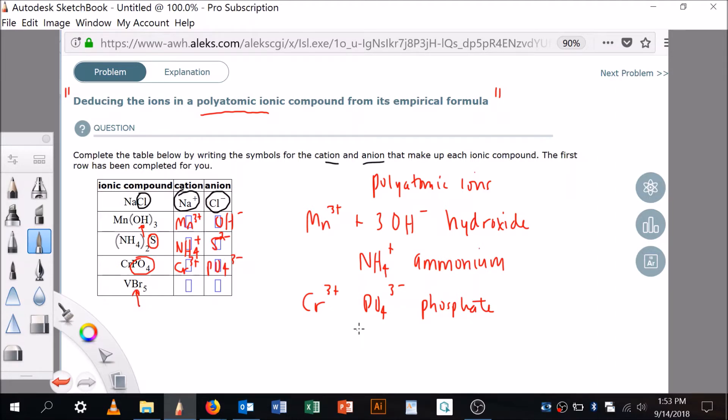All right, let's look at this next one now. Br, I recognize that one because I've memorized it. Br minus, what's the name of this? Say it out loud. It's bromide. Well if there's five of them, what's it going to take to make the compound neutral? It's going to take a vanadium five plus.